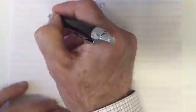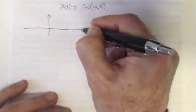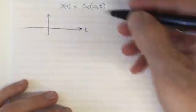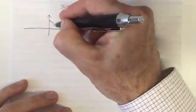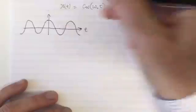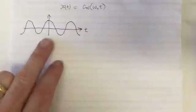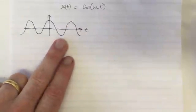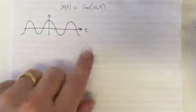If we plot this in the time domain, with time on the horizontal axis, then a cosine wave looks like this. It extends through negative and positive time and has frequency ω₀. This is the time domain.